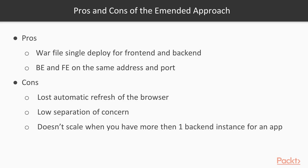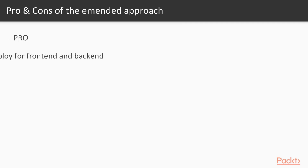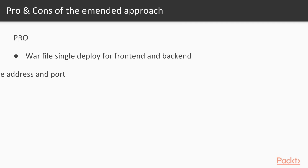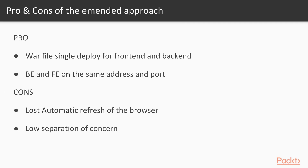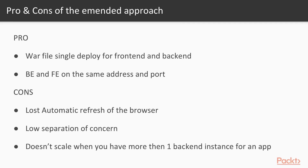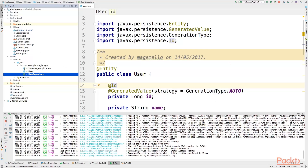What are the pros and cons of the embedded approach? The pros are: single WAR file deploy for both frontend and backend, and backend and frontend on the same address and port. The cons are: slow rebuild on frontend changes, low separation of concerns, and it doesn't scale when you have more than one backend instance. Let's now look at the other approach — running an Angular 2 application alongside the Spring Boot app.